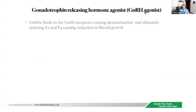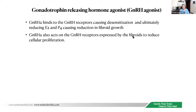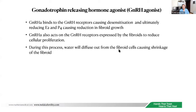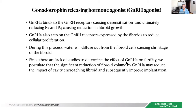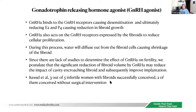GnRH analog binds to GnRH receptors, causing desensitization and ultimately reducing estrogen and progesterone, which reduces fibroid growth. It also acts on GnRH receptors expressed by the fibroid to reduce cellular proliferation, with water diffusing out of fibroid cells causing shrinkage. Since there is a lack of studies on GnRH analog for fertility in patients with intramural fibroid, we postulate that significant fibroid volume reduction may improve implantation. In one study by Kessel, 3 out of 5 fibroid patients successfully conceived, two without surgical intervention.